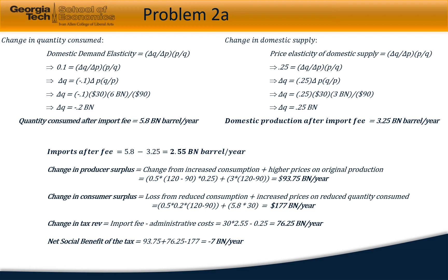The resulting increase in producer surplus is 93.75 billion per year and the resulting decrease in consumer surplus is 177 billion. The tax revenue generated from the import fee after administrative cost is 76.25 billion per year. Taking all these into account, the net benefit turns out to be a negative 7 billion per year.